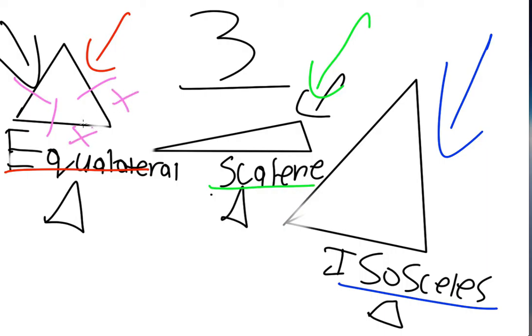Which we denote by putting these tiny little lines through the sides. If we wanted to show that they were not congruent, we'd have a different number of lines in each side.